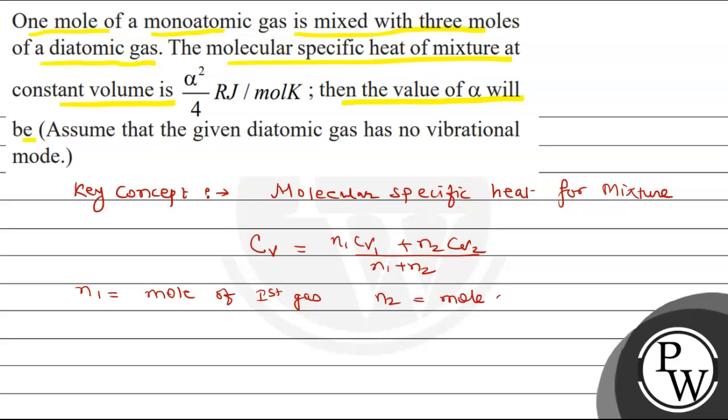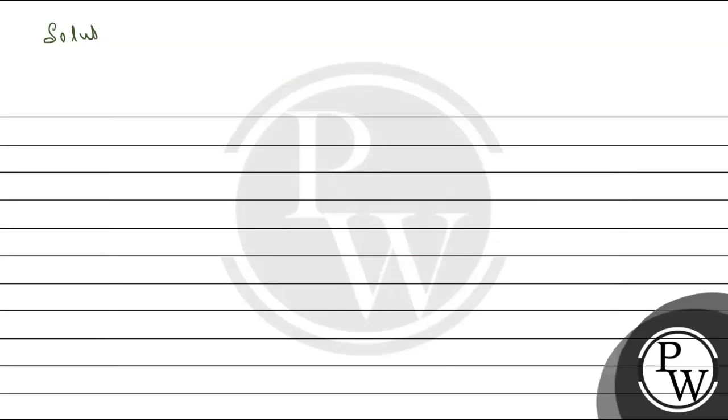Here we have N1, that is the amount in moles of first gas, and N2, that is moles for second gas. Cv1 and Cv2 are specific heats at constant volume for first and second gas. First means monoatomic and second is diatomic. Now let's look at the solution using the given values.